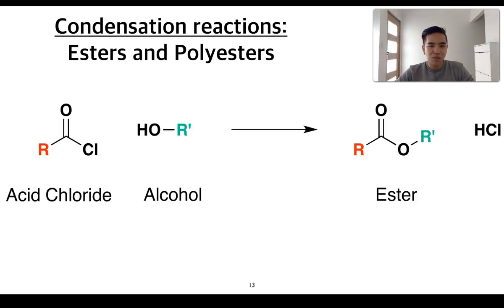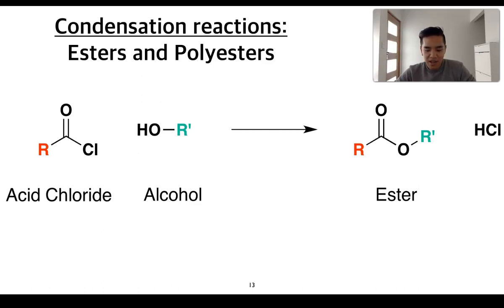Another similar reaction involves what we call an acid chloride reacting with an alcohol. This shows you that molecules other than water can be released as the small molecule — in this case we end up with HCl as the small molecule that gets released, and this still results in the formation of an ester.